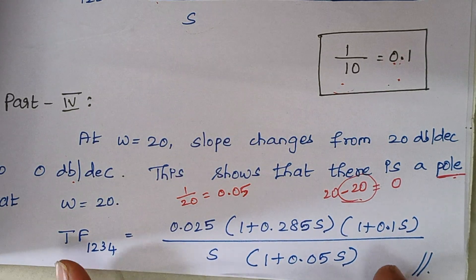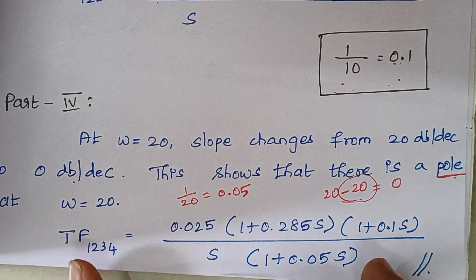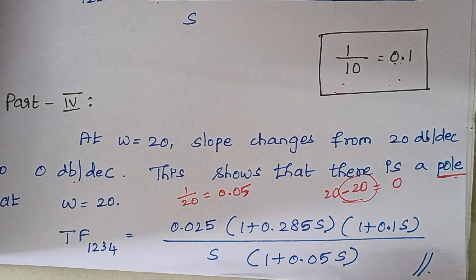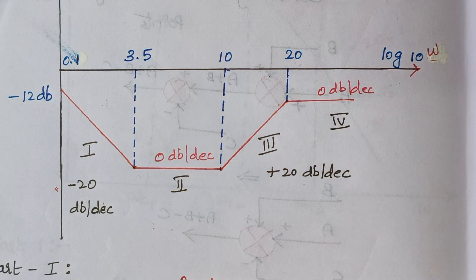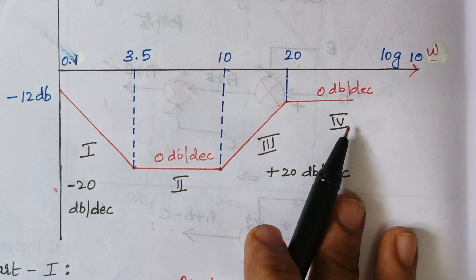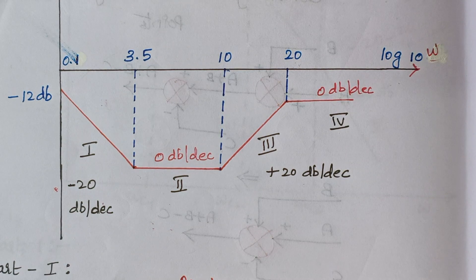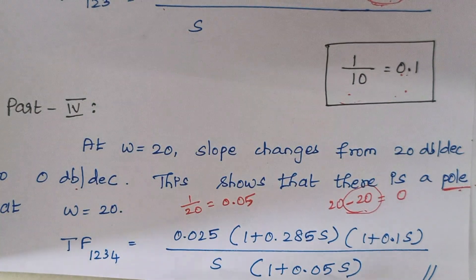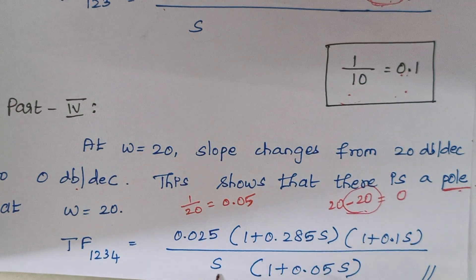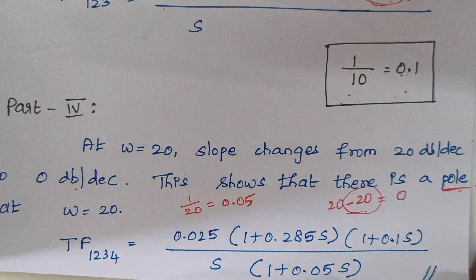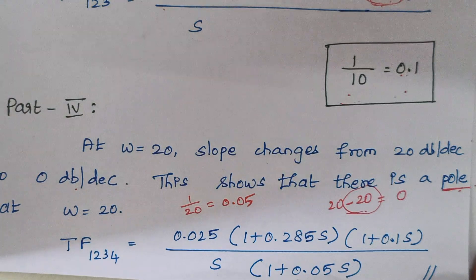This is our complete transfer function for the given Bode plot. A useful trick: the number of parts in the Bode plot equals the number of terms in the transfer function. We had 4 parts, and indeed the transfer function has 4 terms. The problem is solved. I hope you understood well — if you have any doubts, let me know in the comment section. Thank you.